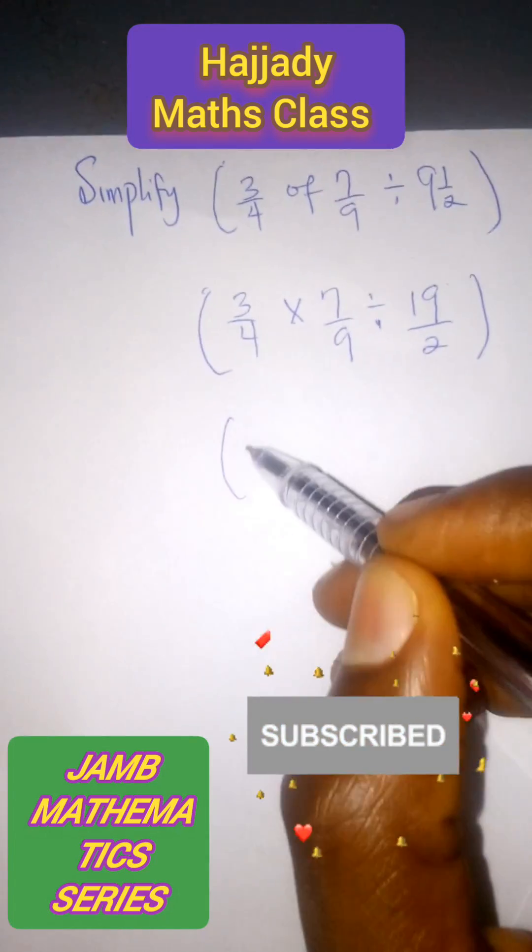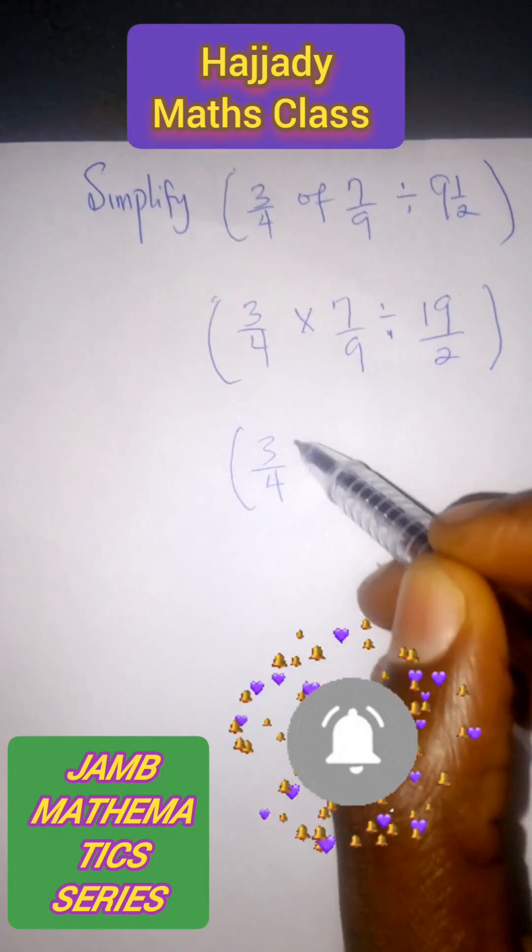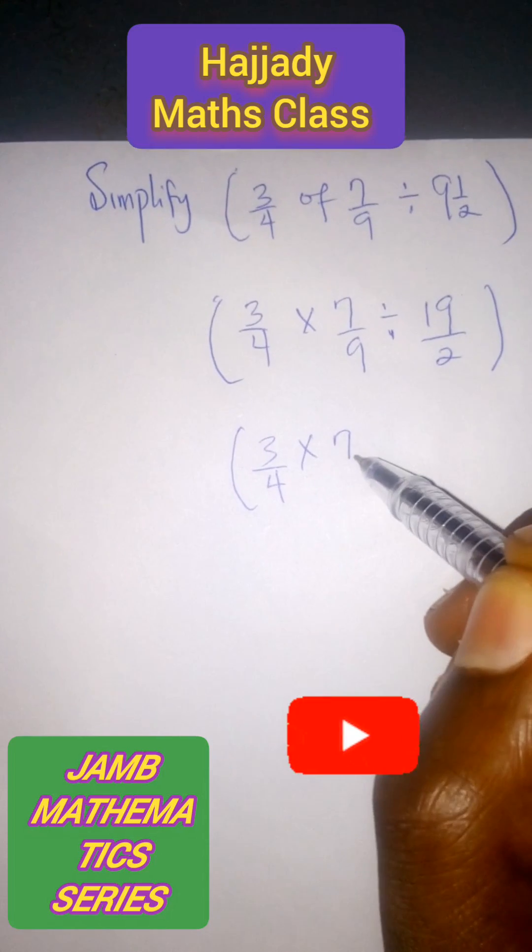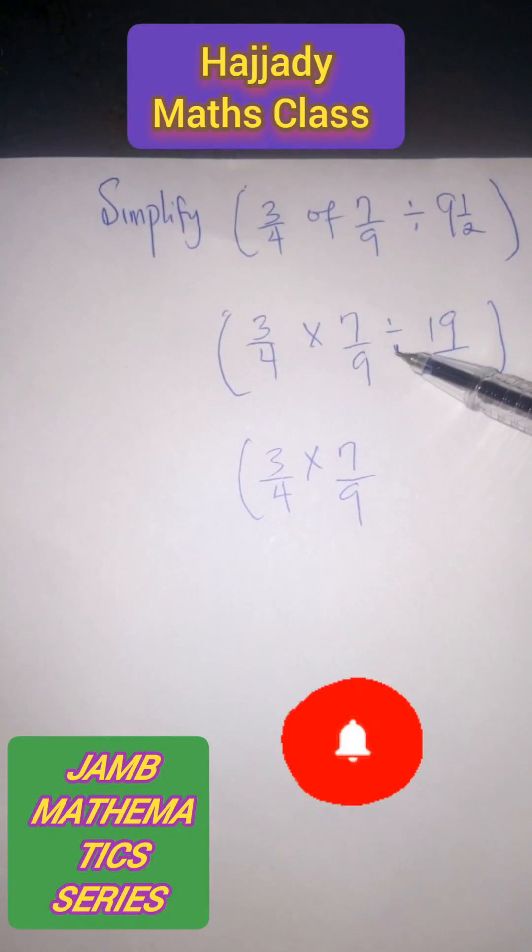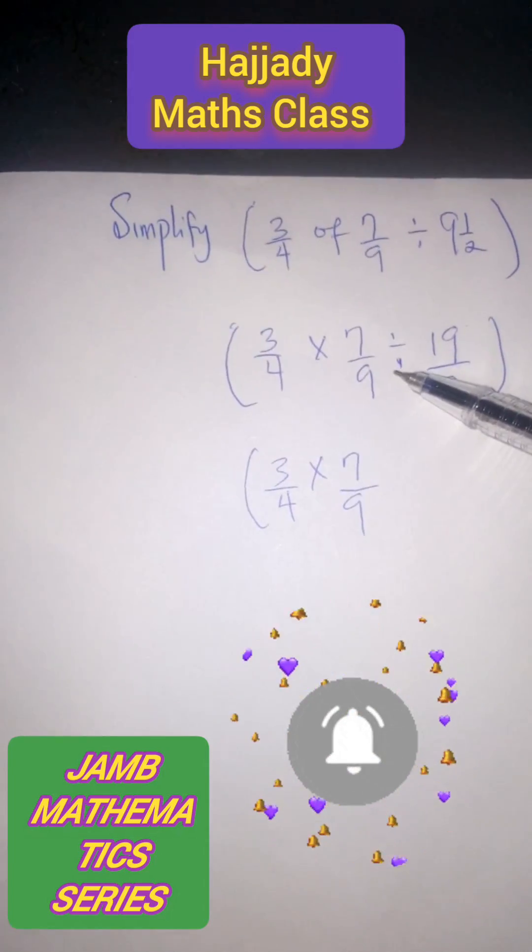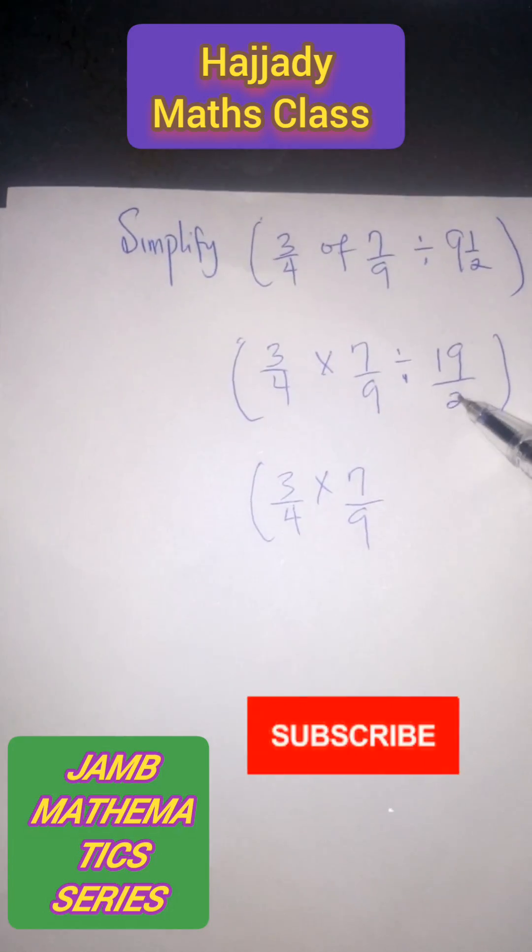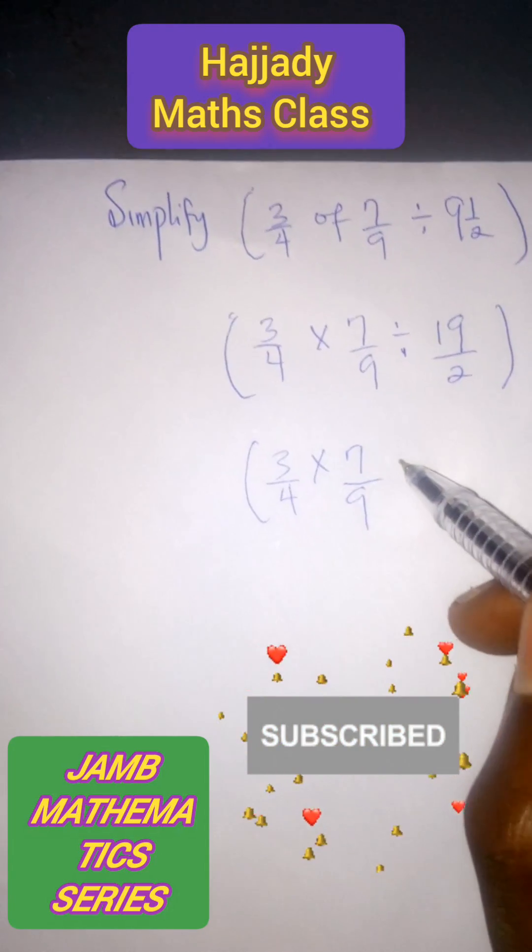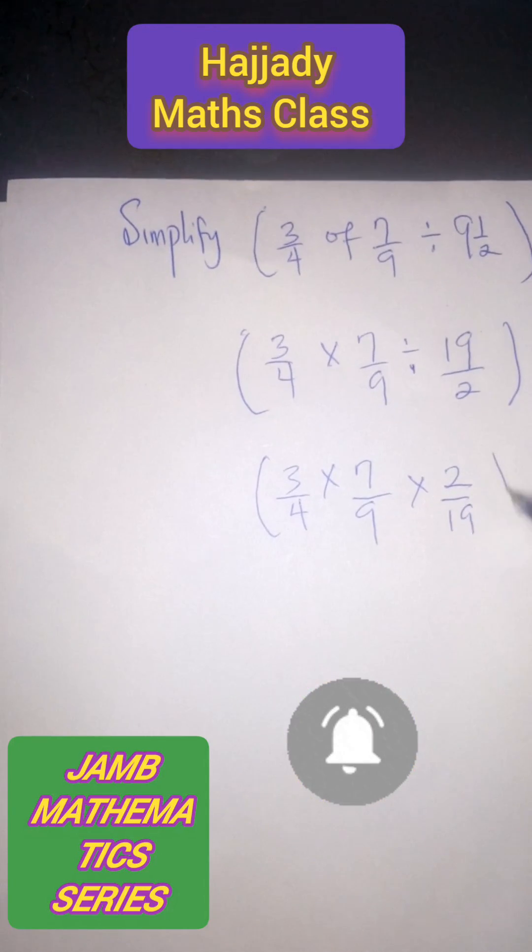So with this we have 3 over 4 times 7 over 9. The division sign we change to multiplication and here we are going to find the reciprocal of this. So here we have 2 all over 19.